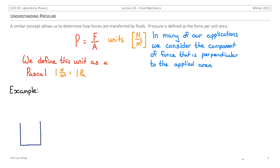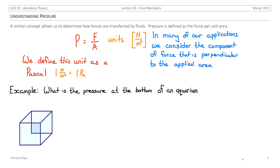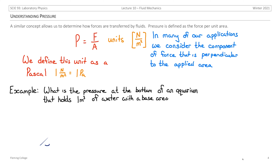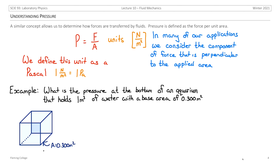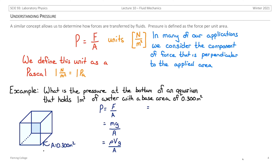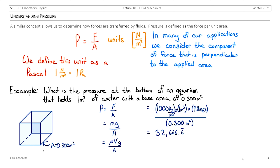Let's look at an example for pressure. What is the pressure at the bottom of an aquarium that holds 1 cubic meter of water with a base area of 0.300 meters squared? We use pressure equals force divided by area, where the force is the weight of all the water, so we replace force with mass times gravity. Mass is replaced by rho times volume. Substituting the density of water (1,000 kg/m³), 1 cubic meter of water, gravity, and base area of 0.300 m², we get approximately 30,000 Pascals of pressure at the bottom.